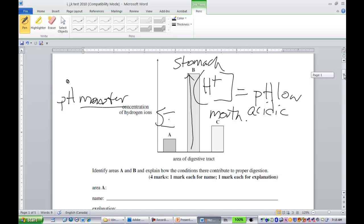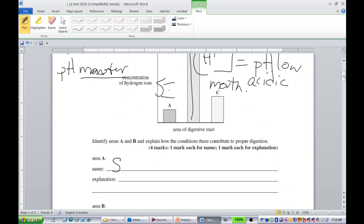So, the answer here, the name of A was small intestine. You had to explain how the conditions contribute to digestion. The optimal idea, optimal pH for the enzymes that are working here. Some of you were too general in this.